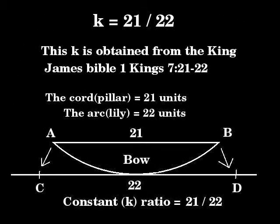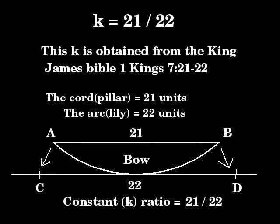The ratio x over y of the chord to the arc of the bow of any circle is 21 over 22. This is obtained from 1 Kings 7, verses 21 to 22 of the King James Bible. K is x over y, which is 21 over 22. The chord — the pillar — is 21 units. The arc — the lily — is 22 units.